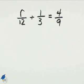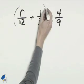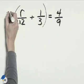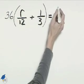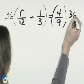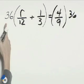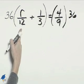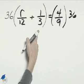With this equation, because there are fractions, let's multiply both sides by the least common denominator and eliminate those denominators. The LCD here is 36, so let's multiply the left by 36, and be sure we multiply the right by the same thing. Now it's 36 times R over 12, and 36 times 1 third.